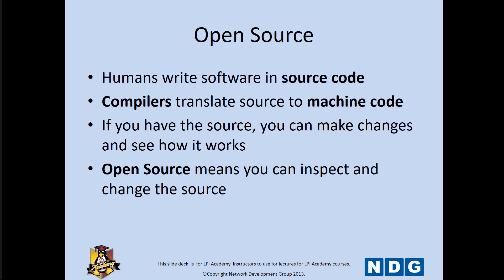Open source is a huge concept here. Humans write software in source code, and that code has to be compiled. There's typically a compiler that will translate source to machine language. Microsoft does not give you the source code — Microsoft gives you the compiled code, meaning you can't make changes to the source code. With Linux distros, you can.